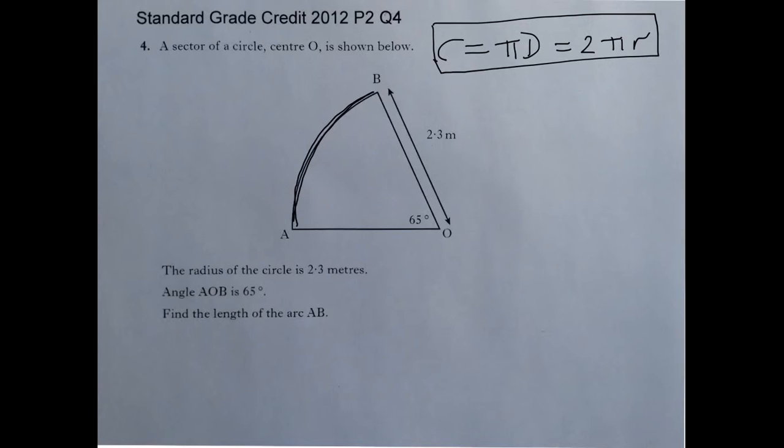So we're talking about a fraction of the circumference. It's 65 degrees out of 360 degrees, that's a fraction, times the circumference. So times pi D or 2 pi R, whichever is easier. In this case we're using the radius, so let's talk about 2 pi R.